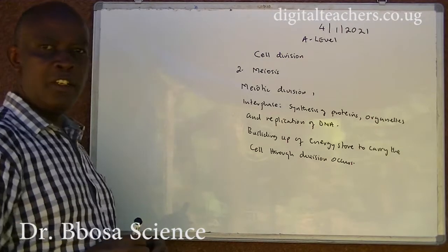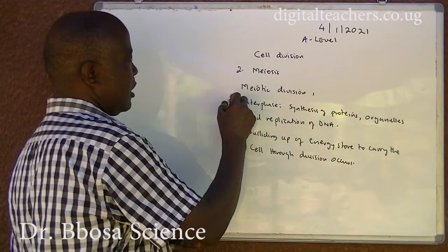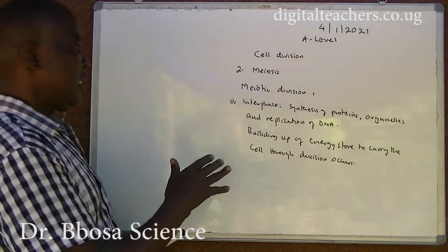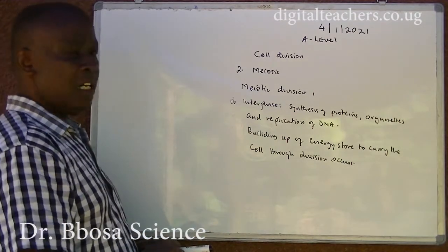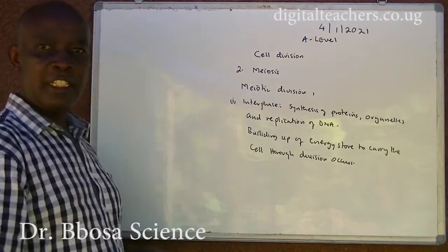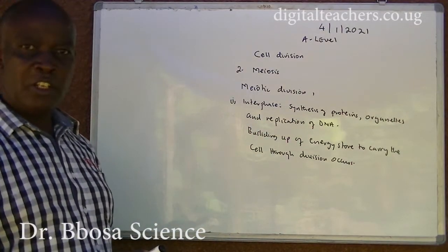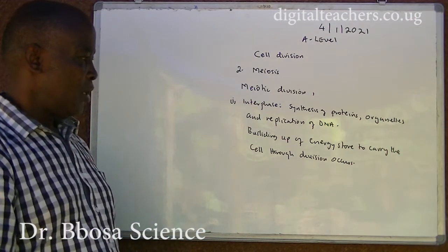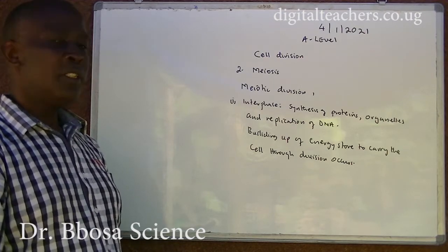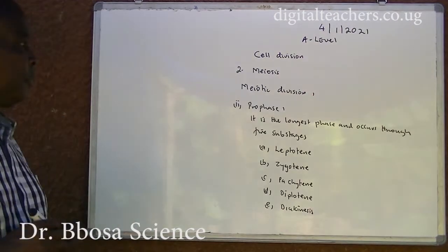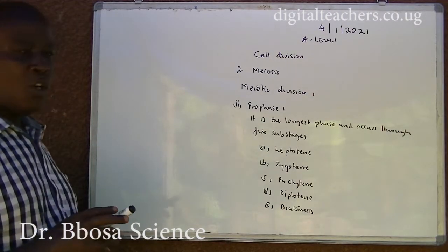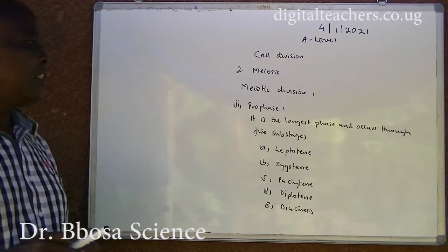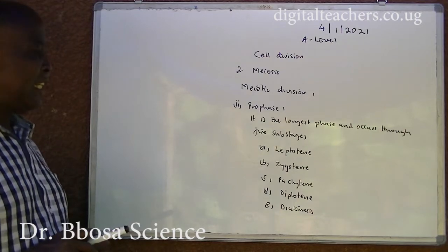Meiotic Division I: the first stage is interphase, where there is synthesis of proteins, organelles and replication of DNA, and building up of energy stores. Stage two is prophase I, which is the longest phase and occurs through five sub-stages.